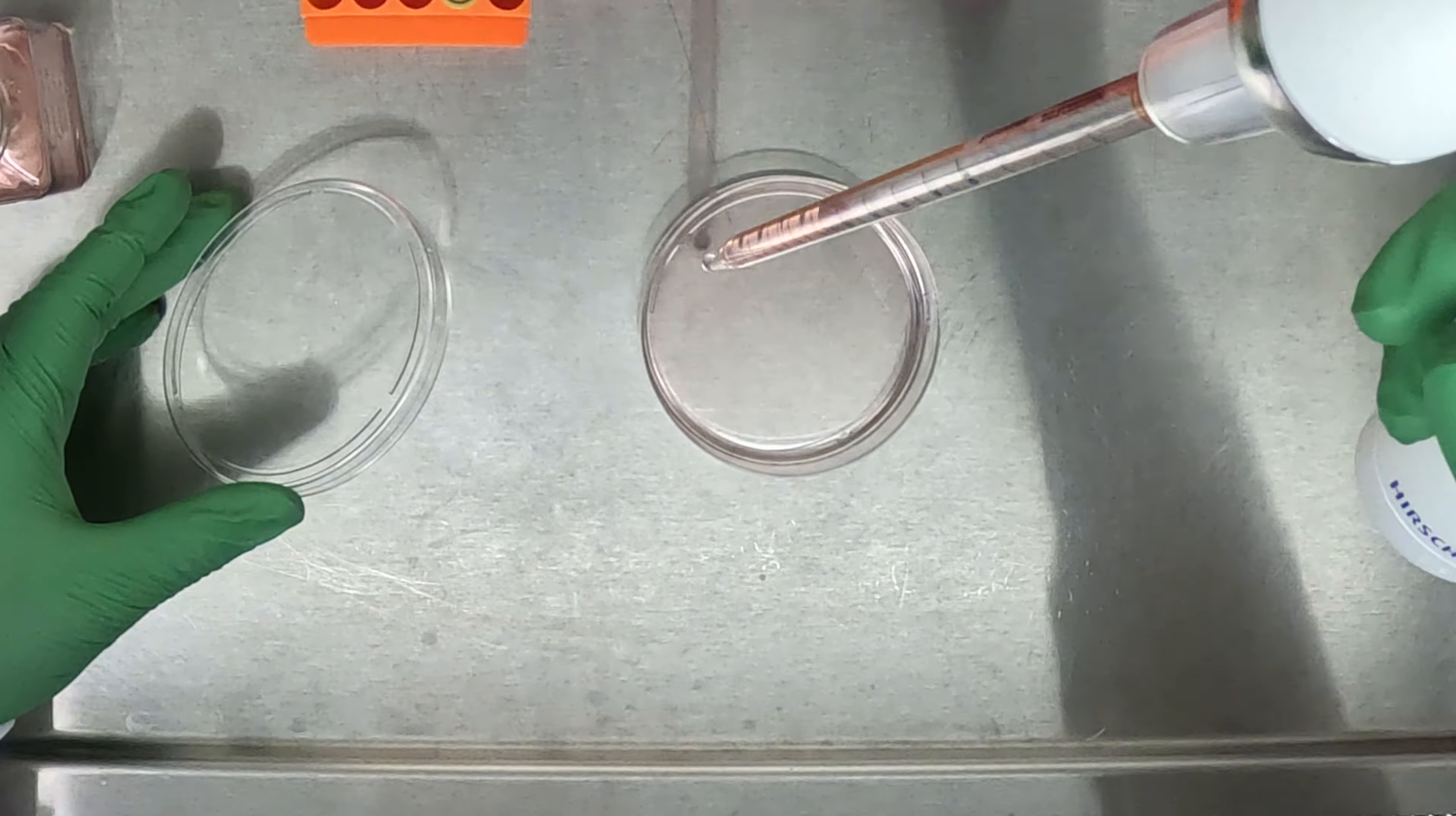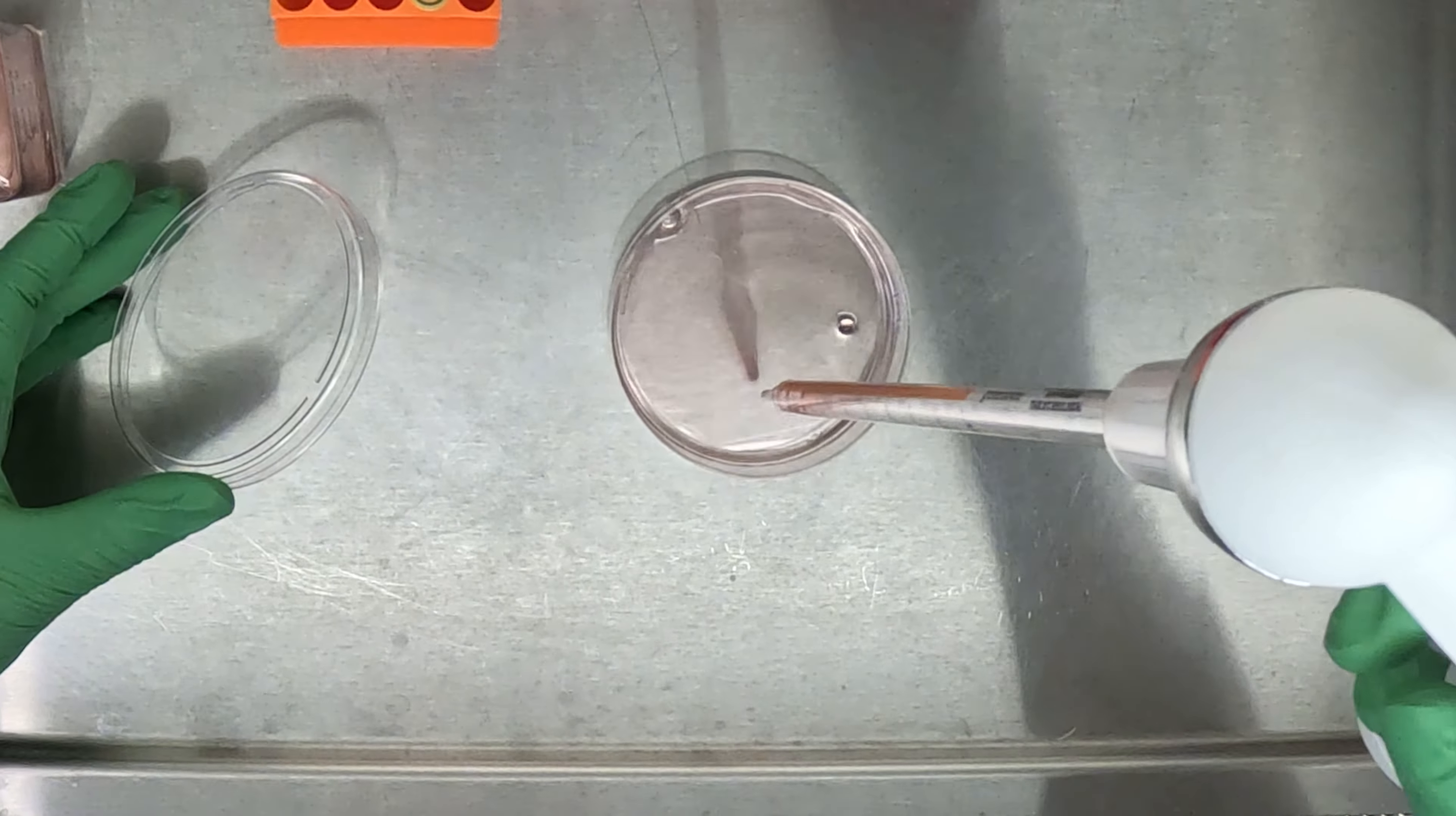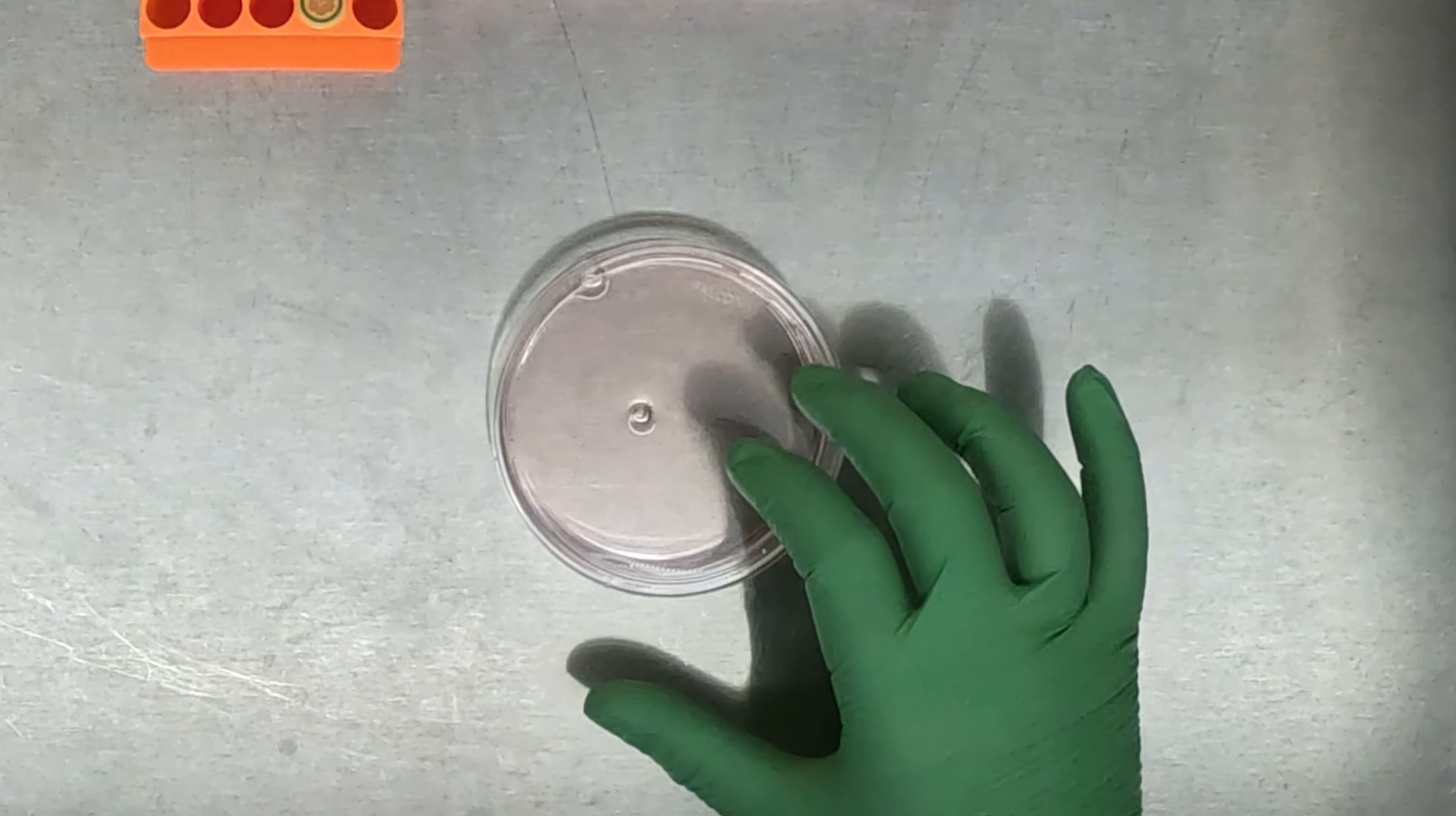At this step, it's very important to make sure that you are evenly distributing the 5ml across the entire 10cm dish. This is to ensure that the cells are equally distributed across the plate. Once you have aliquoted the entire volume of your cell suspension to your recovery dish, gently move the plate back and forth and side to side three times to make sure that the cells are evenly distributed.